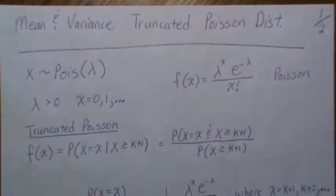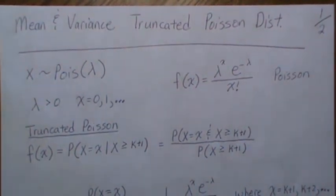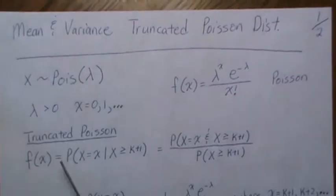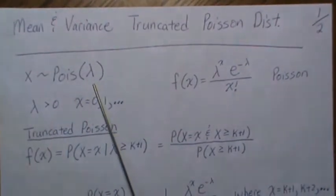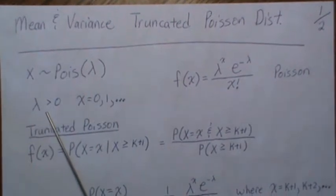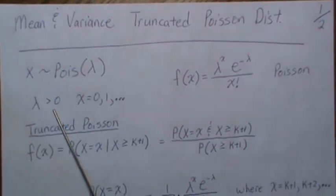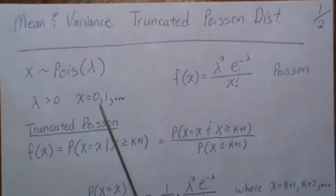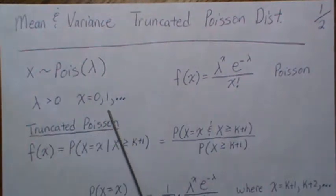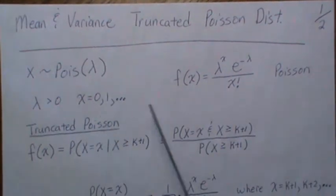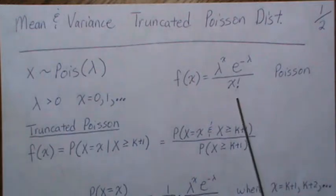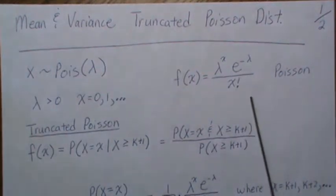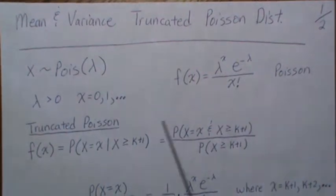Hello, in this video we're going to look at the mean and the variance of a truncated Poisson distribution. As a reminder, if x is Poisson with parameter lambda, the domain is non-negative integers, and here's the distribution function for the Poisson.